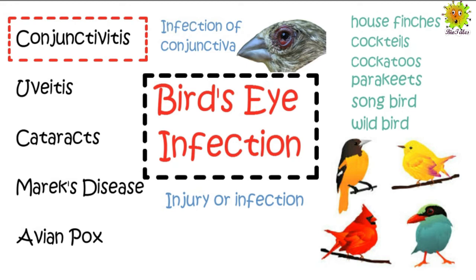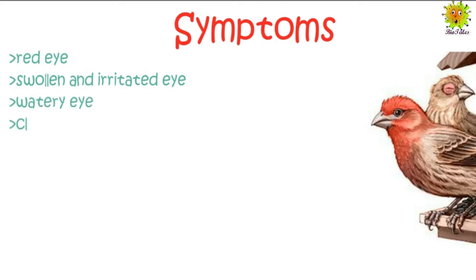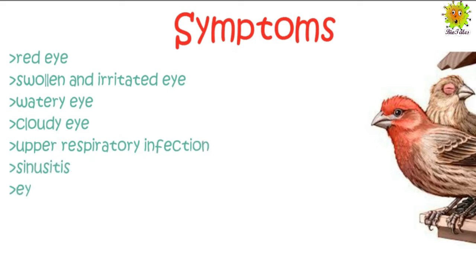The infection can spread to other parts of the eye or the upper respiratory system. Conjunctivitis can be identified by various symptoms that include red eyes, swollen and irritated eyes, watery eyes, cloudy eyes, upper respiratory infection, sinusitis, eye discharge, and nose discharge.